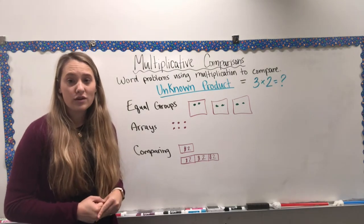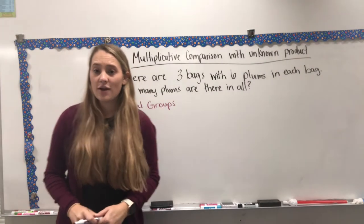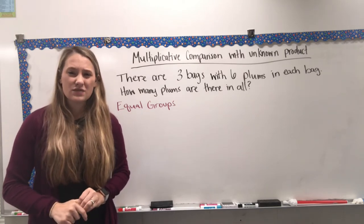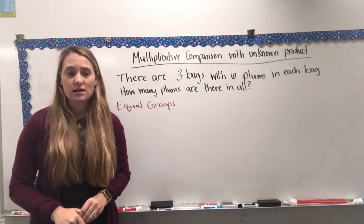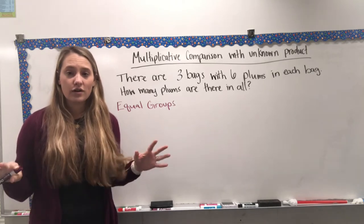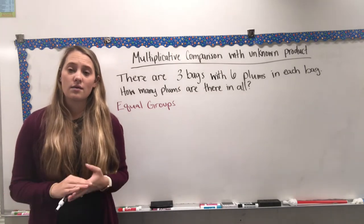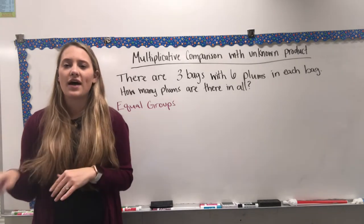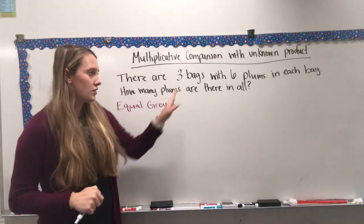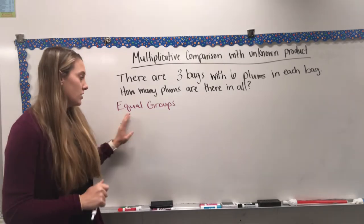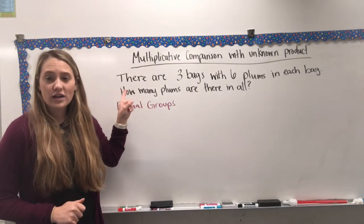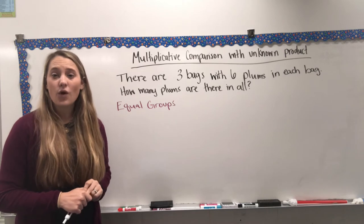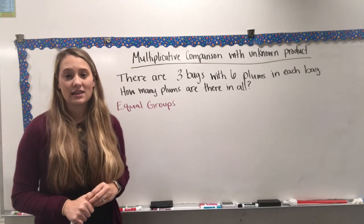We're going to start with equal groups. Finding the unknown product is something you've been doing since first grade. This week is just an introduction, so don't worry. Our first step is always to read the word problem. The problem is: there are three bags with six plums in each bag. How many plums are there in all? The important information is three bags and six plums in each bag.